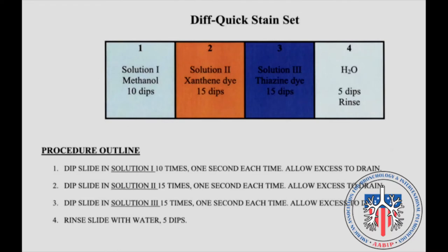Once the needle aspirate specimen has been smeared on a slide and air dried, it is then dipped in methanol, xanthine, thiazine, and water in sequential order as outlined here in this slide. It is dipped in methanol 10 times and xanthine and thiazine 15 times.